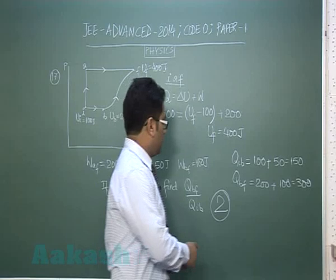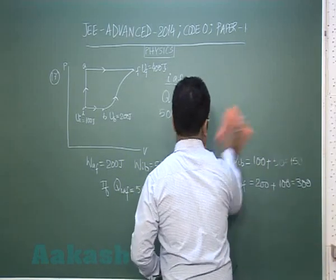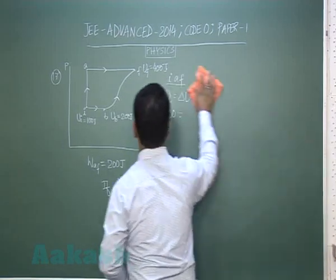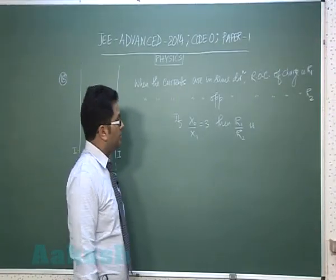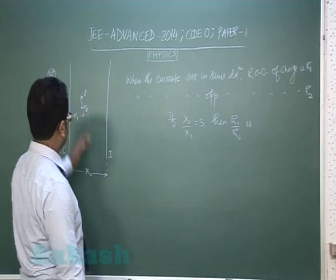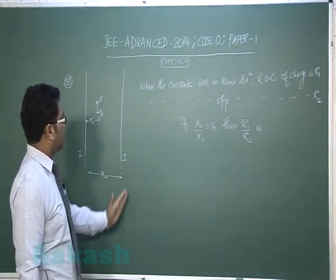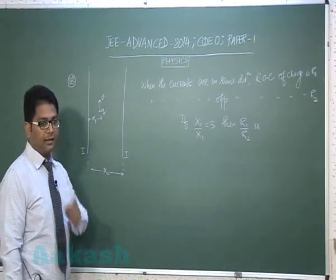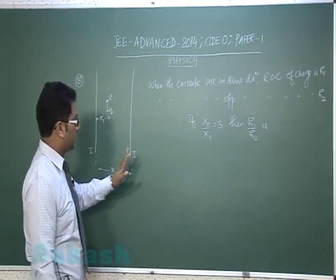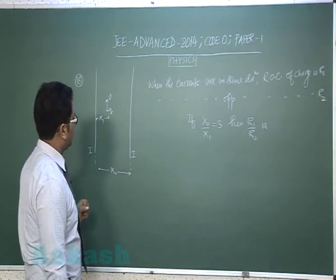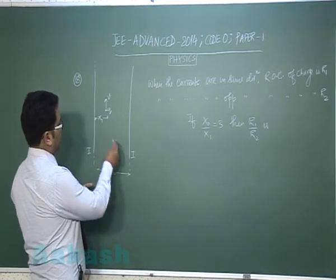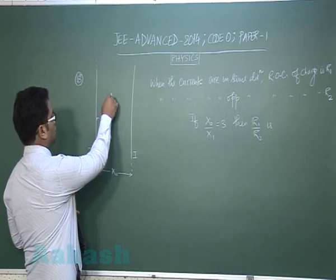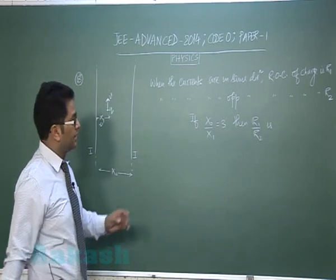Now we'll move to question number 18. Question number 18 is from magnetism. These are two long current carrying wires and they carry same current I but the direction has not been given. They are separated by distance x_0 and at distance x_1 a charge Q moves with a certain velocity in the same plane.